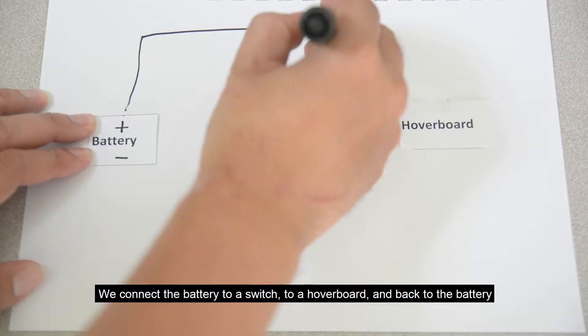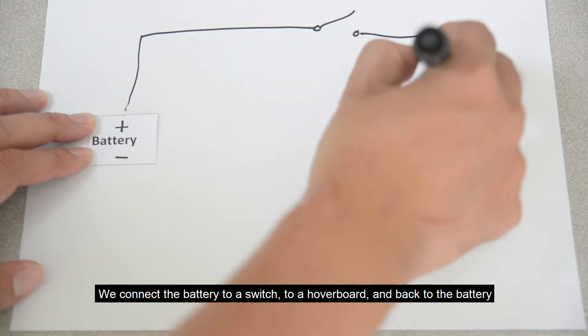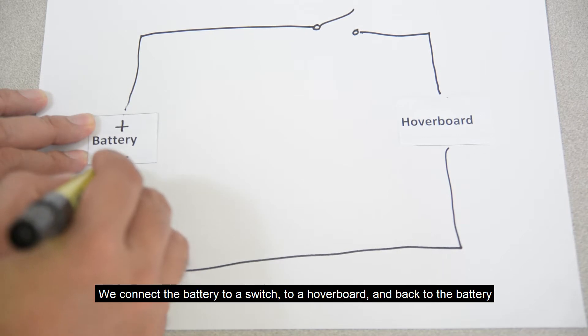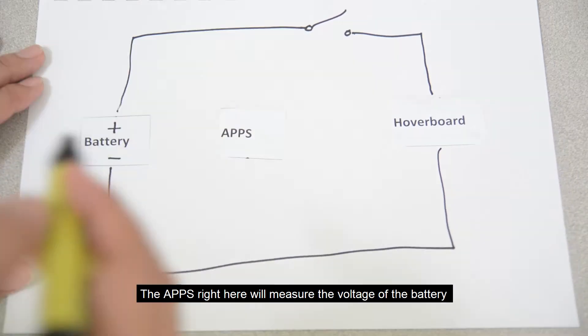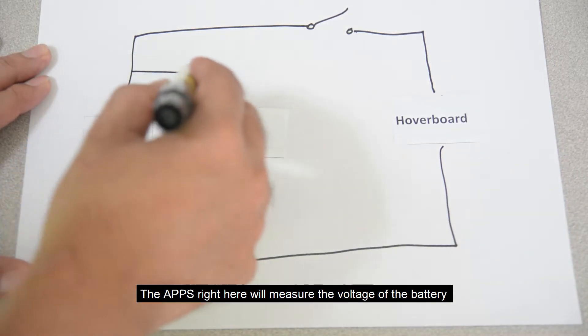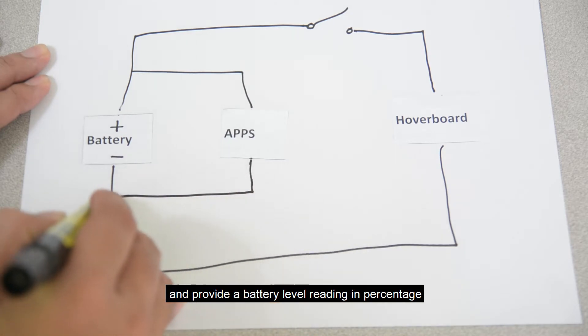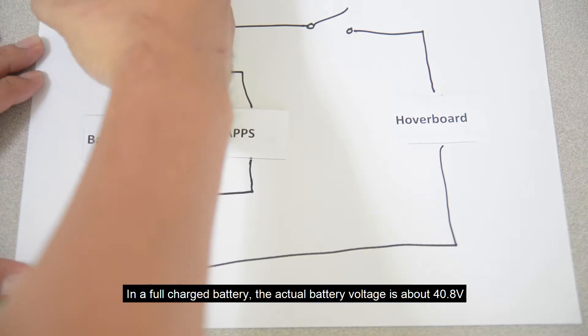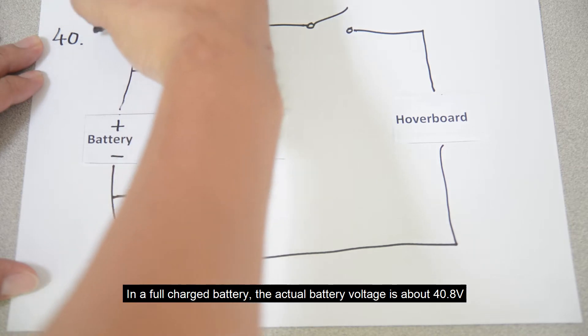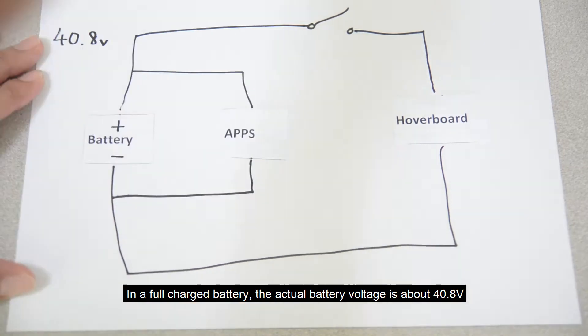We connect the battery to a switch, to a hoverboard, and back to the battery. The apps right here will measure the voltage of the battery and provide a battery level reading in percentage. In a full charged battery, the actual battery voltage is about 40.8V.